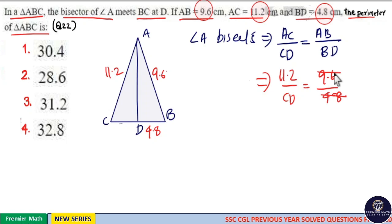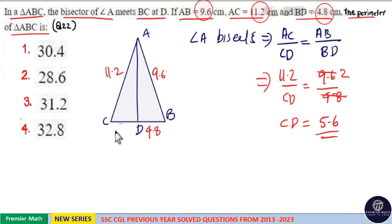Now, 4.8 goes 2 times the 9.6, which means CD is equal to 11.2 by 2, which is equal to 5.6. So, CD is equal to 5.6.